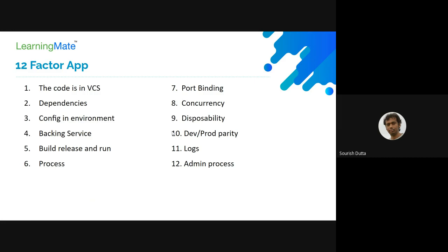Another popular concept is the 12-factor application. It originated from Heroku when they were building their cloud platforms. A 12-factor application defines 12 features that a cloud-native application should support, and these features can be translated to other cloud environments. It essentially describes a single service - a single process running as an individual application.